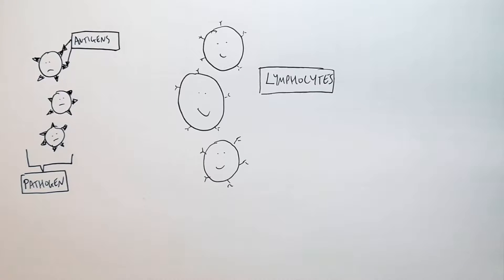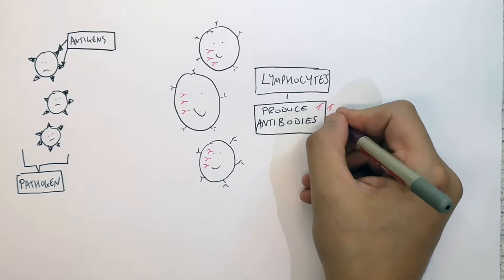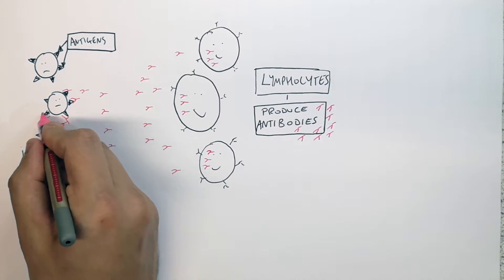Lymphocytes are white blood cells. They will start producing antibodies specific to the antigens of that one pathogen. So the lymphocytes are going to produce antibodies. So they release the antibodies into the blood.